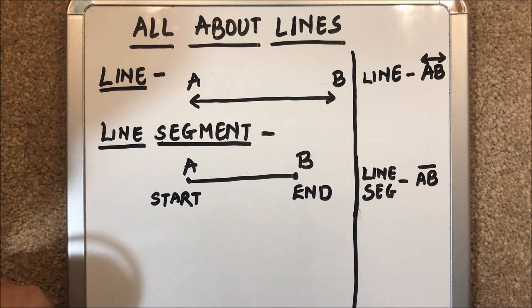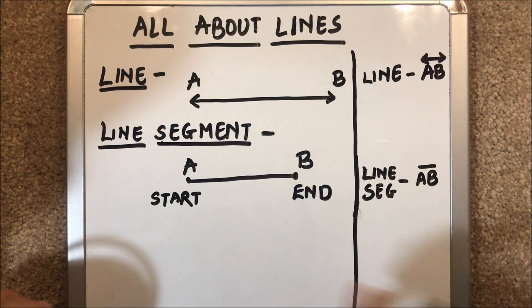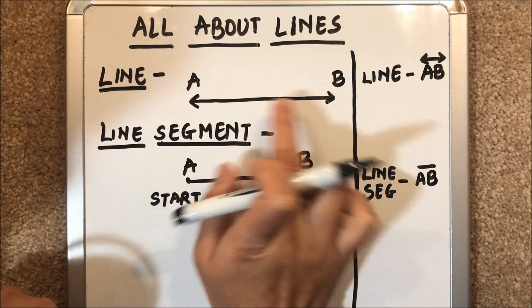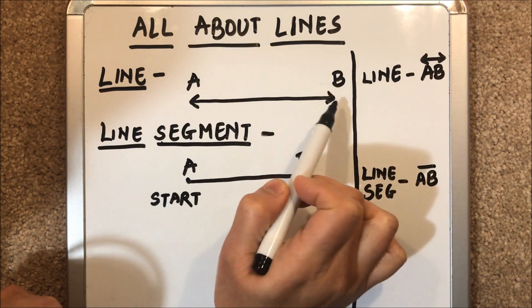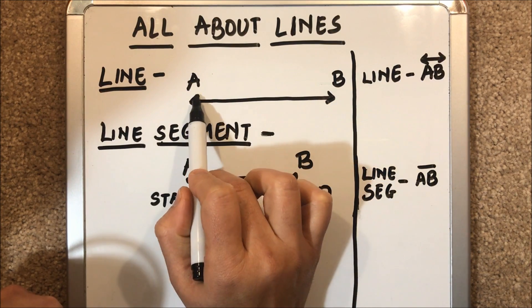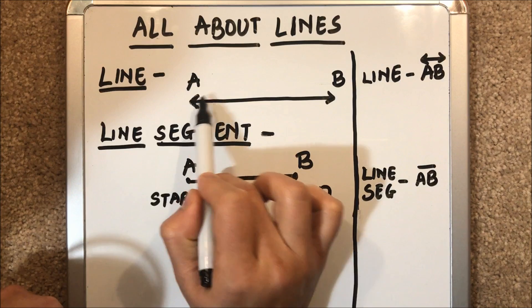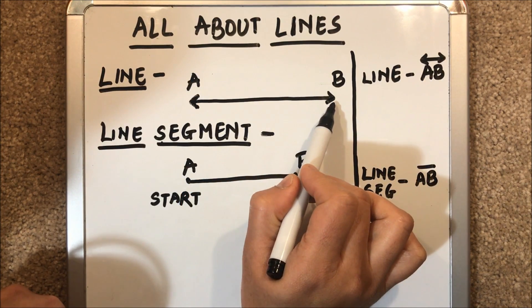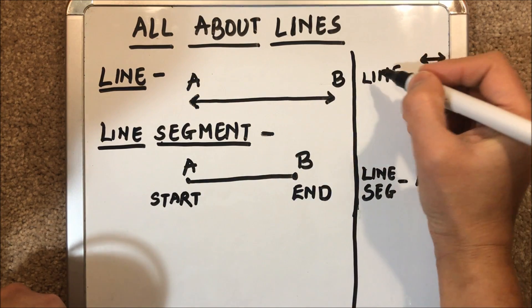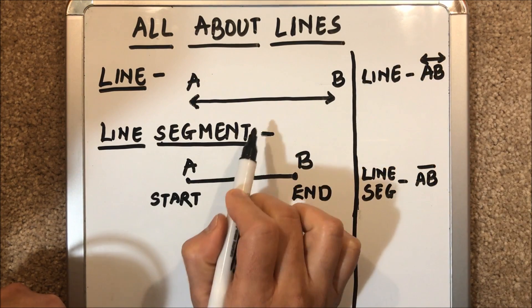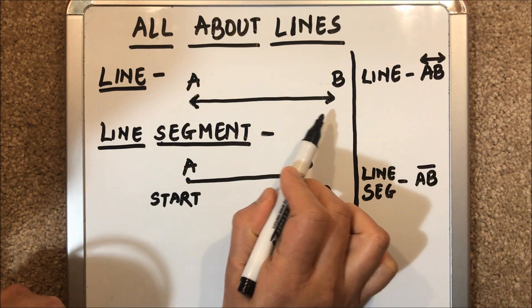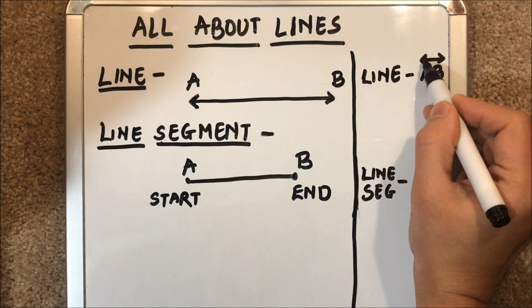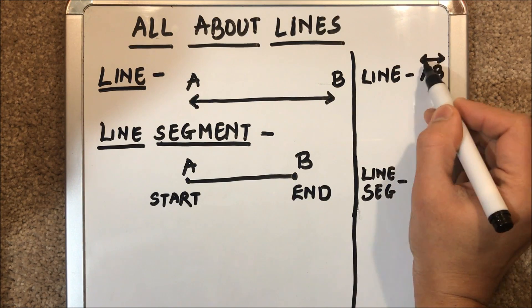Hello viewers, today I am going to tell you about lines. A line is a straight path which extends in both directions. Here, A and B form a line, and the arrows represent that it is extending in both directions. It is not having a definite length — it is of indefinite length. We represent a line as line AB with a bar on top with a two-sided arrow.